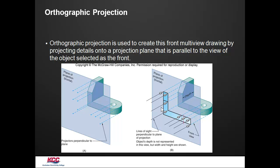These are always pressed up against the glass in what's called an orthographic projection, meaning it's at right angles to the glass box.